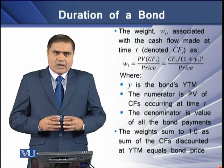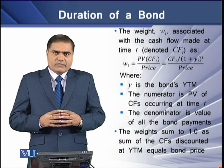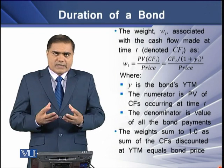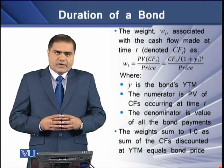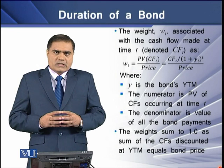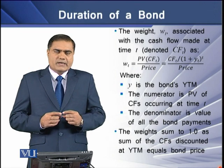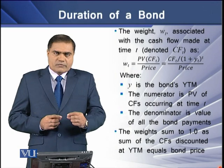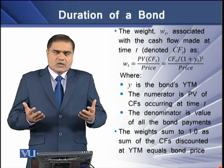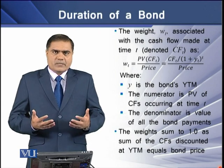The weight WT associated with the cash flow made at time T is the present value of all the cash flows divided by the bond's fair market price. To determine the weight of the individual cash flow, we need to divide the present value of the individual cash flow or the coupon value over the whole price of the bond, and that whole price is basically the fair market price of the bond.